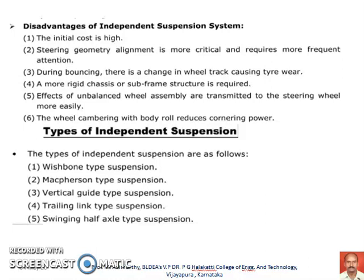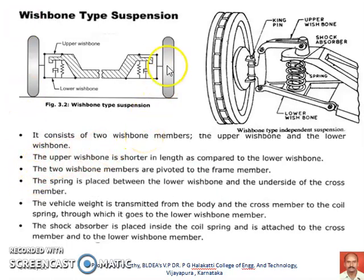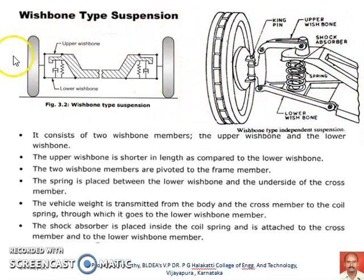There are various kinds of independent suspension systems. They can be listed as follows: first, the wishbone suspension system; second, the McPherson type suspension system; third, vertical guide suspension; fourth, trailing link suspension; and fifth, swinging half axle type of suspension system. The wishbone suspension system and McPherson type suspension system are the more popular types of independent suspension systems used in the automobile. Here in this sketch, you can observe the wishbone type of suspension system, with one view providing the details of the arrangement of the arms, springs, and shock absorber.